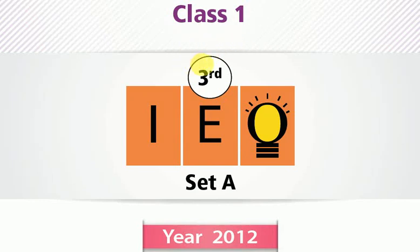Very good morning. Class 1 IEO SAT year 2012. In this paper, this is Olympiad questions for English. In this paper, 35 questions. I will cover first 20 questions in this paper and remaining will be in the next video. It means 21 to 35 questions will be in the next video. Subscribe my channel and click the bell icon button.